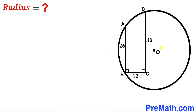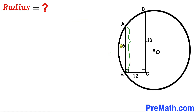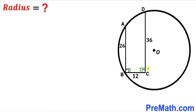Welcome to pre-math. In this video, we have a circle with center O, along with chord AB, segment BC, and segment CD, as shown in the diagram. Chord AB is 26 units, segment BC is 12 units, segment CD is 36 units, and the marked angles are 90 degrees. Our task is to calculate the radius of this circle.